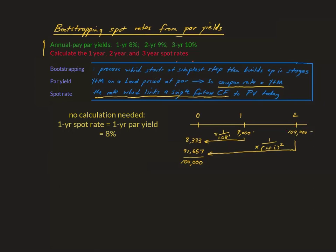You then use the eight percent one-year spot rate to calculate the present value of the T1 cash flow, which is 8,333 Rand. Next, because you know that the bond is priced at par at T0, you fill in the total market value of 100,000 Rand at that date. This means that the T0 present value of the 109,000 Rand cash flow occurring at T2 has to be 91,667 Rand, because this is the only number that will work to ensure the total T0 value is 100,000 Rand — you fill in the missing number through simple deduction.